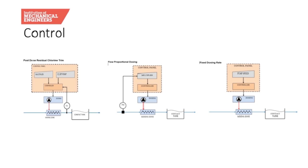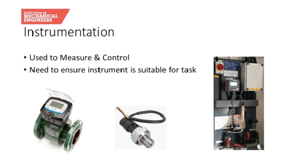Flow proportional dosing is used when the volume of liquid being dosed is variable — the amount of chemical needs to be adjusted to prevent over or under dosing. The controller uses information from the flow meter and when the flow changes, the controller adjusts the pump speed accordingly. Fixed dose is usually used when the liquid is being dosed at a fixed rate and a known quantity of chemical is needed; the fixed amount may vary with, for example, seasonal changes, and this would be a manual change. Fixed dose can also be used when there is no upstream flow measurement or downstream instruments.